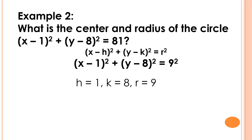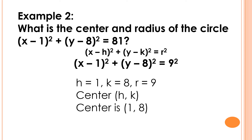Next, we're going to write the coordinates of the center of the circle, wherein the center is (h, k). So we will just substitute the value of h and k, and the center of the circle is (1, 8), and the radius of the circle is 9 units.